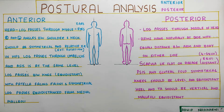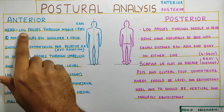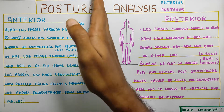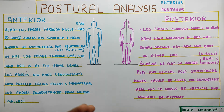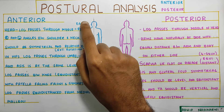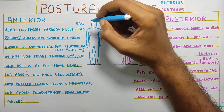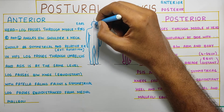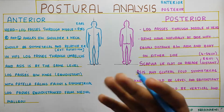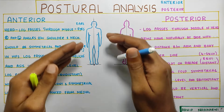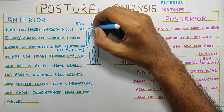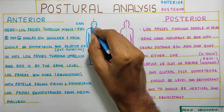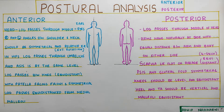From the anterior view, the line of gravity will pass right through the center, dividing the body into right and left halves. The eyes and the ears need to be at the same level. As you come down, you can see the angle formed between your neck and the shoulder — this angle needs to be equal on both sides.